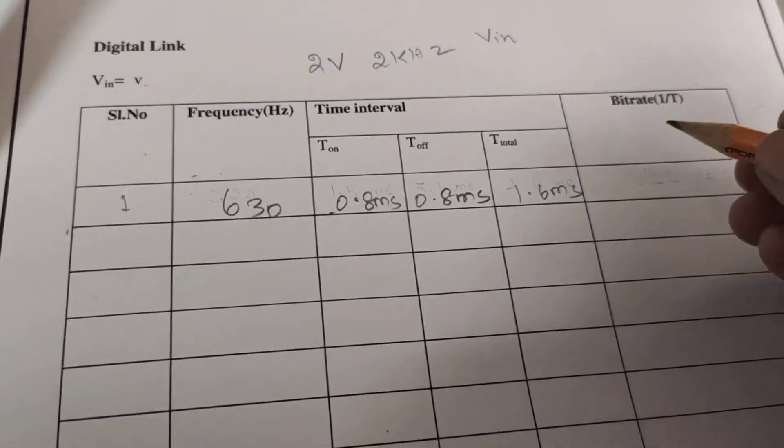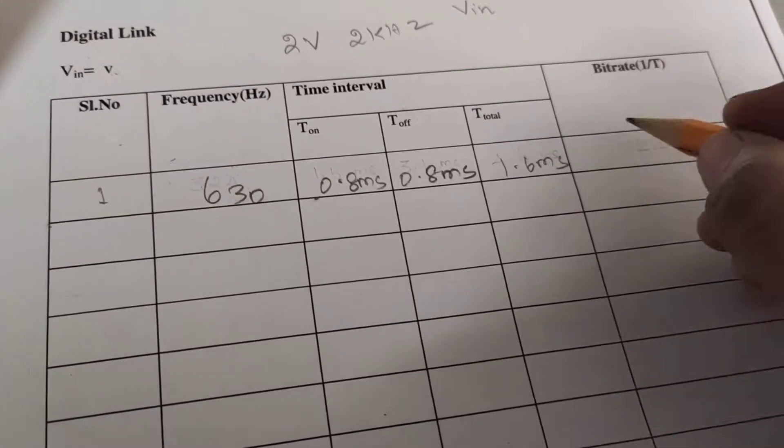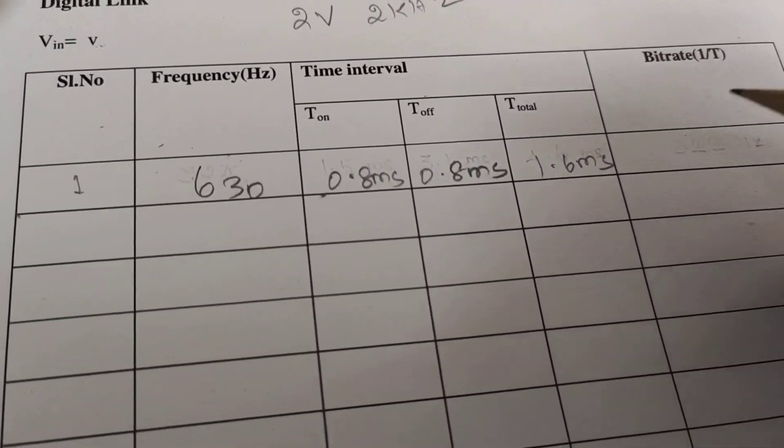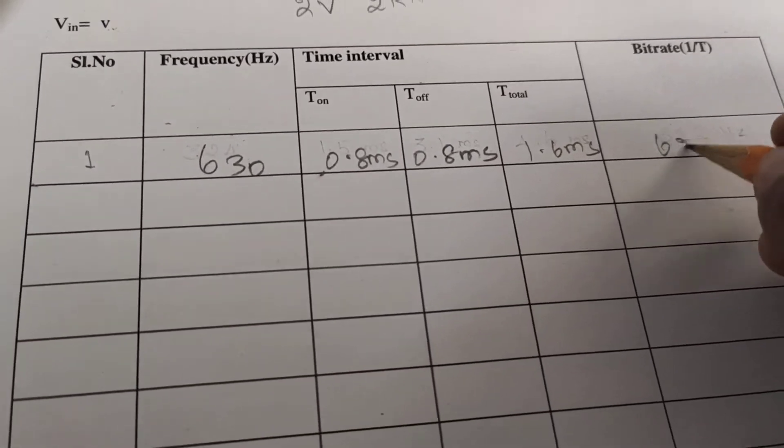Then, from this, we find the bit rate value. Bit rate is 1 by T. We will get 625 Hertz.